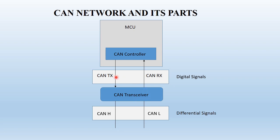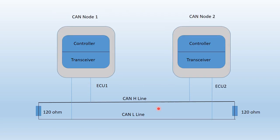That's why a CAN transceiver is used. What it does is it takes the single-ended signals and converts them into a differential signal — what we call CAN H and CAN L. So this is what we call a node. A CAN bus will basically have two lines: the CAN H line and the CAN L line.